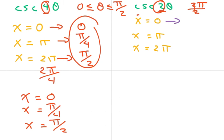So if I divide everything by 2, I get 0 here. This is going to be pi over 2, and this one's going to be pi.